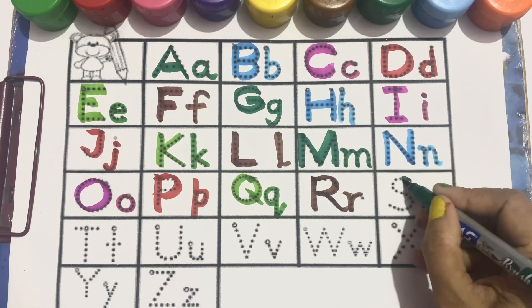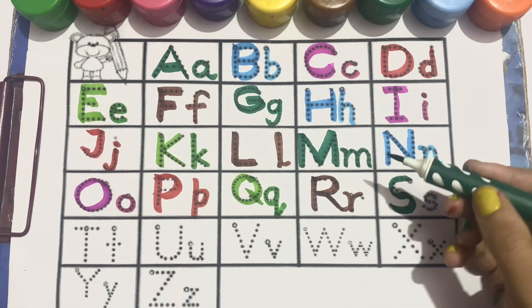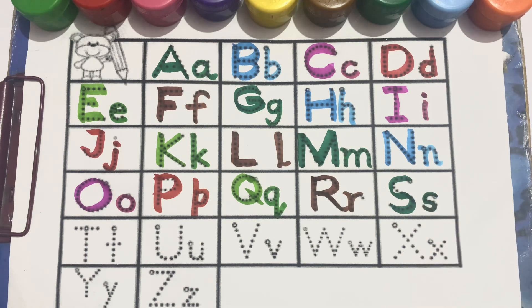Green color. S. Capital S. Now, we'll write small s.